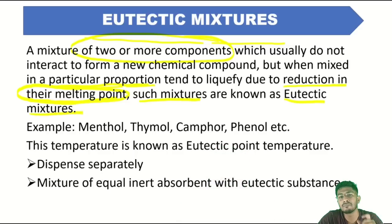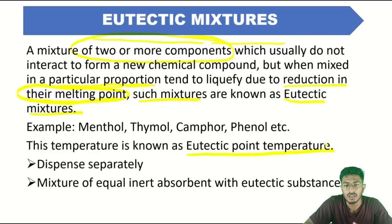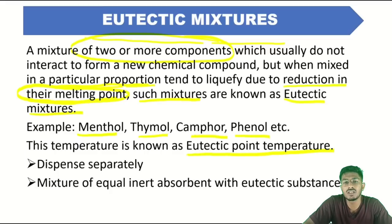This temperature at which the mixture melts is called the eutectic point temperature. For example, substances like menthol, thymol, camphor, and phenol — when mixed, this mixture is called a eutectic mixture.